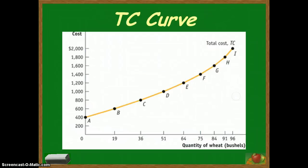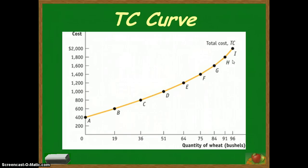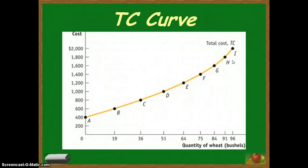We can take that information and graph a total cost curve, which generally slopes upward. Things become more and more expensive because we have diminishing marginal product — it takes more workers to produce the same amount of increase. Because each worker's marginal product is less, it takes more workers to increase total product by the same amount as we increase our production.